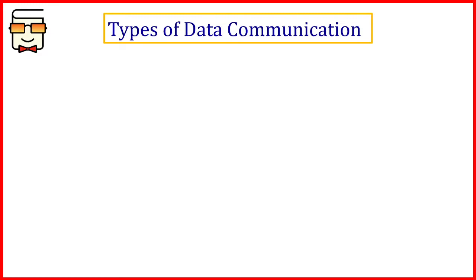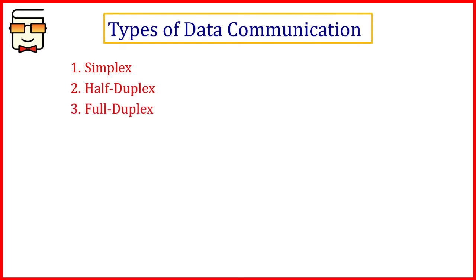Hello students, welcome back to my channel. In this video, we will be studying about the types of data communication that are possible in the real world. There are three types of data communication: the first is simplex communication, second is half duplex, and the third is full duplex communication.